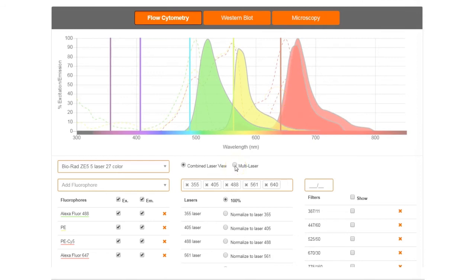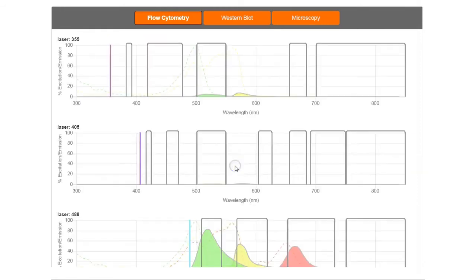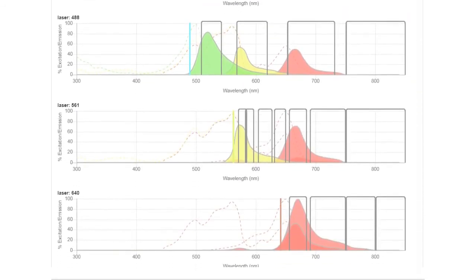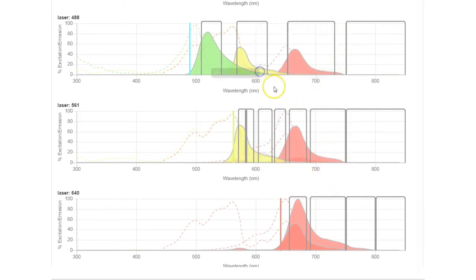Using the multi-laser view, you can break the spectra down by laser, allowing you to quickly and easily check the amount of fluorescence from suboptimal laser excitation, any cross-laser excitation emission, and spillover. Additionally, this feature enables you to compare dyes that have similar emission and excitation spectra but are excited by different lasers.